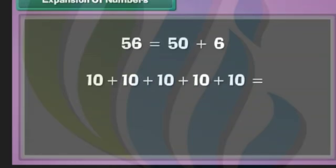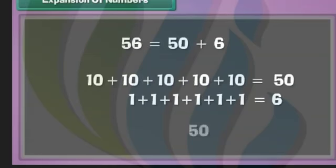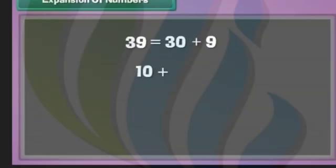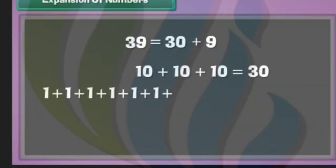Let us break two-digit numbers into tens and ones. Fifty-six can be written as fifty plus six. It means there are five tens and six ones in fifty-six. Similarly, thirty-nine can be written as thirty plus nine. It means there are three tens and nine ones in thirty-nine.